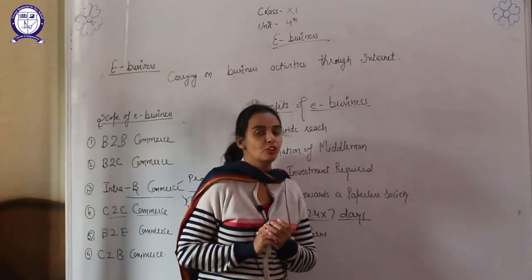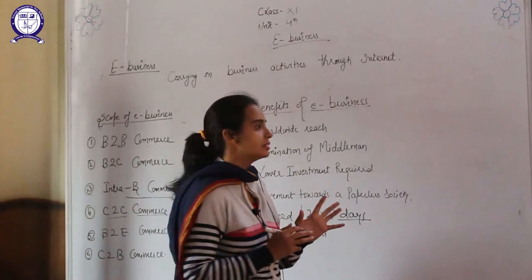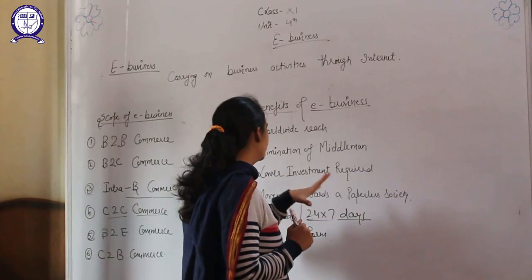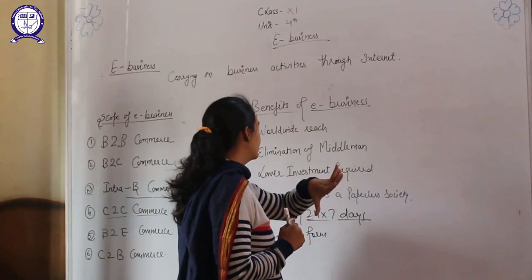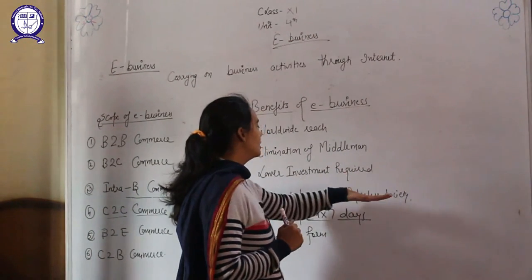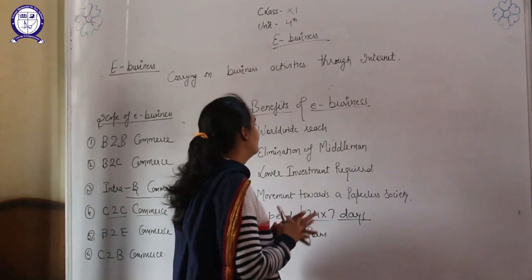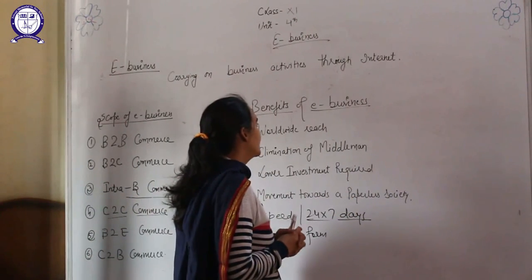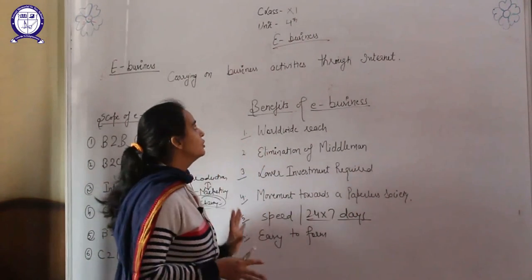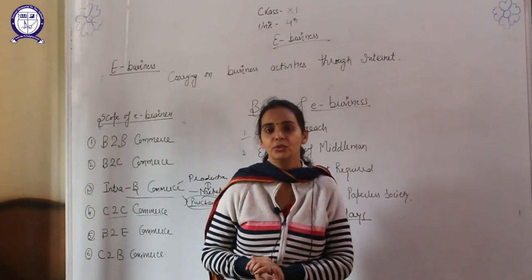In traditional business, there is always a particular time of opening and closing of shops. Easy to form — there are fewer formalities for setting up e-business. So the benefits are: lower investment required, available 24×7, moving towards a paperless society, reduces the role of middlemen, and has worldwide reach. This was the unit of e-business. Thank you.